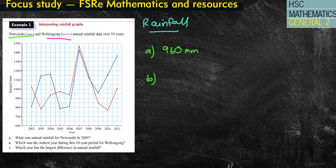For part B, which was the wettest year during the 10-year period for Wollongong, for the red line. Well, the wettest year is going to be the highest point for the rainfall. I can just see it above here. Now, that's going to be about 1460 millimetres, but we're looking for the actual year that occurs in. And that is in the year 2007,